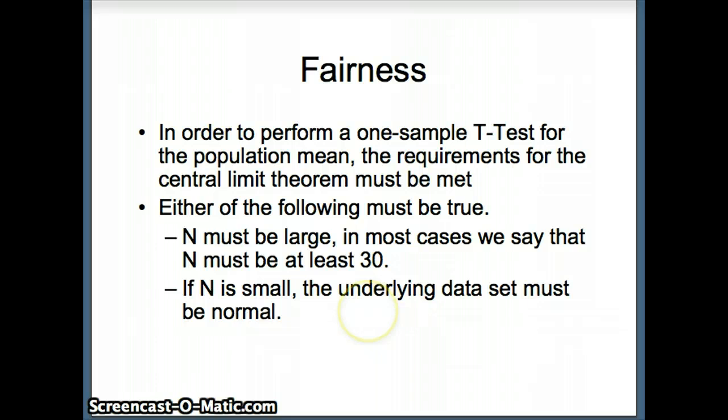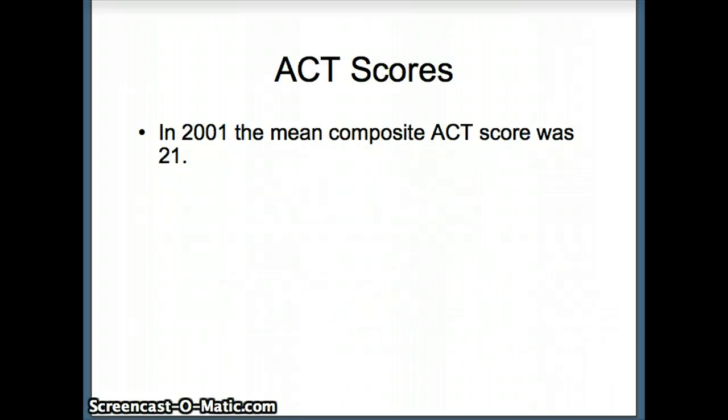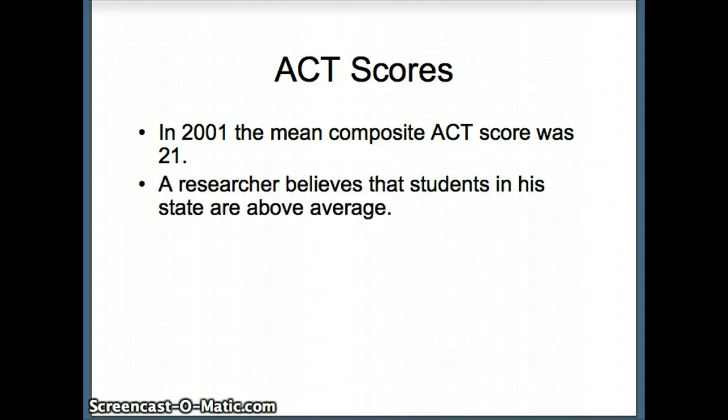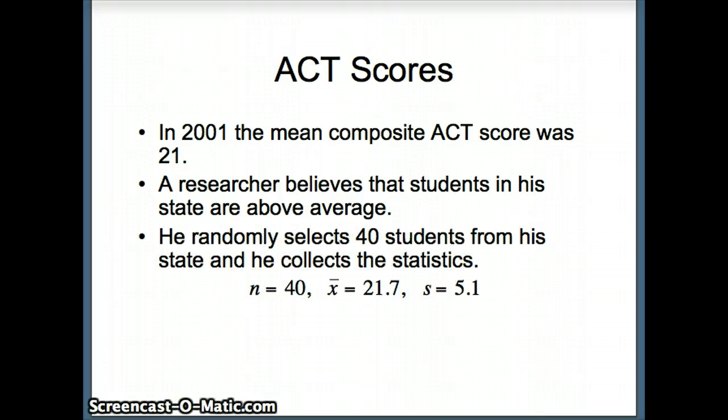Here's an example looking at ACT scores. In 2001 the mean ACT composite score was 21, and a researcher believes that students in his state are above average. He randomly selects 40 students from his state and collects these statistics.